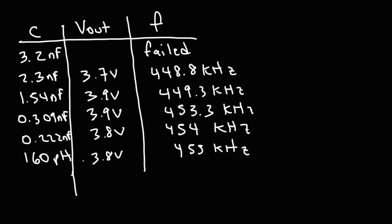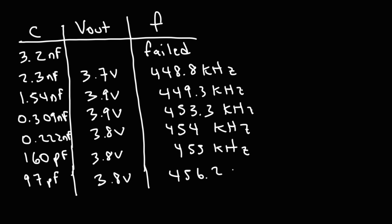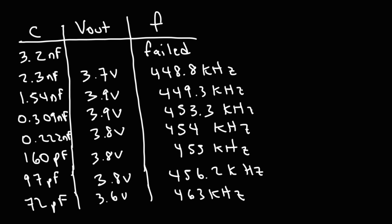Going below this capacitance value: using a 97 picofarad capacitor, the voltage didn't change but the frequency was slightly higher than 455. Using a 72 picofarad capacitor, distortion was introduced — the frequency was no longer stable, varying between 462 and 464, eventually settling at 463 but fluctuating, whereas the other frequencies were very stable to the nearest tenth.